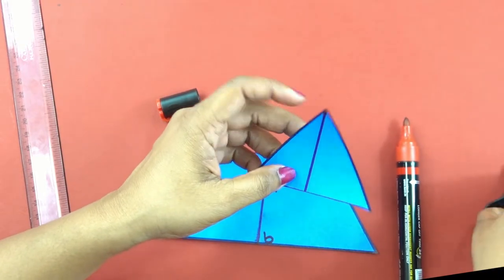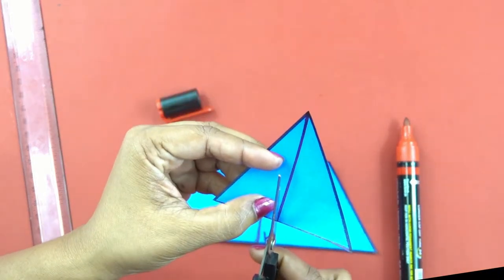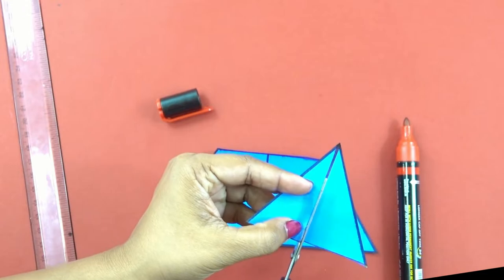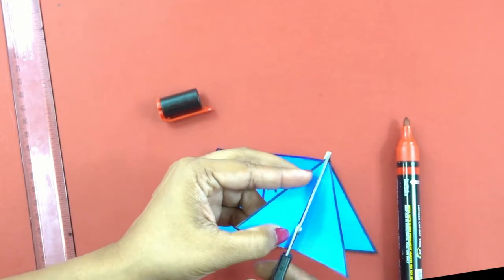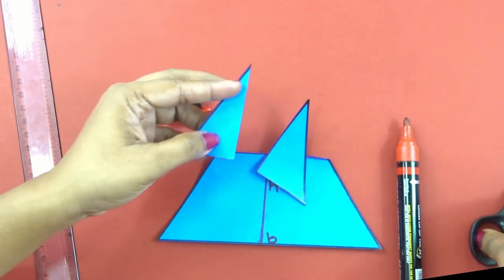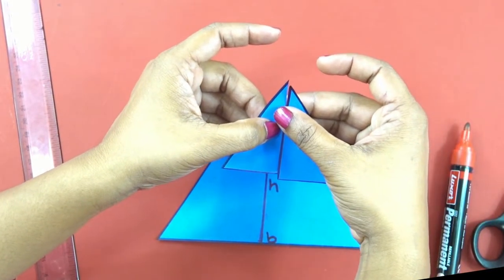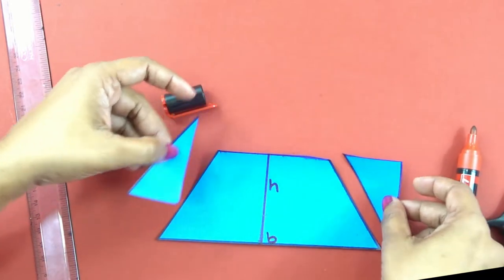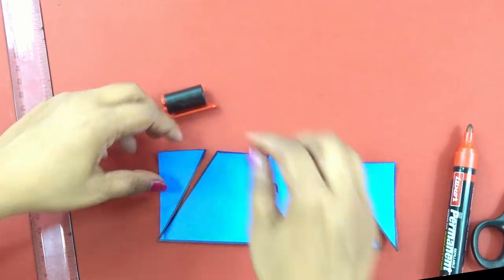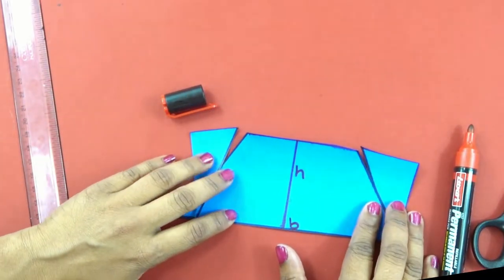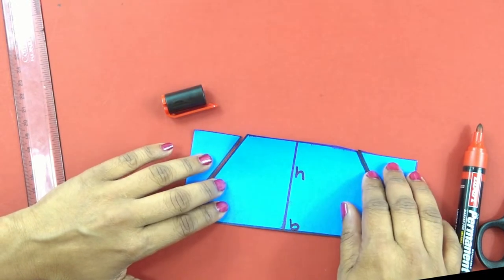Let me cut this smaller triangle into exact two triangles, smaller triangles. Let's see if it fits. See? It is fitting exactly.